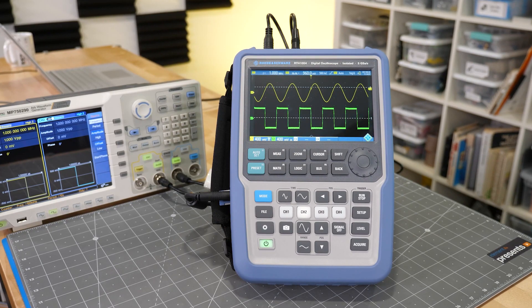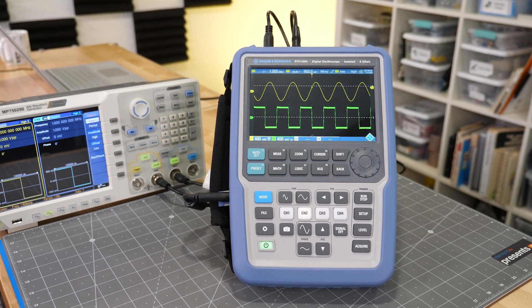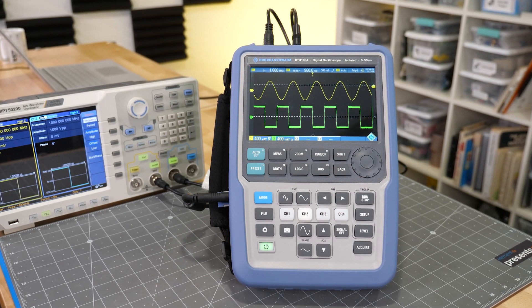For example, this scope is measuring the same signal on each channel, yet the waveform looks different on each. The reason is they have different bandwidths.